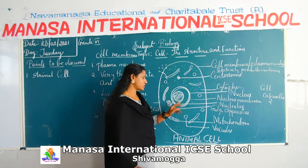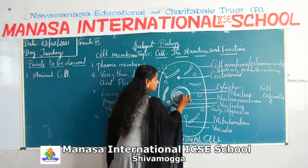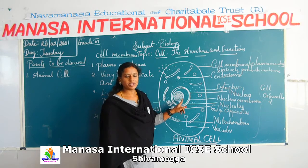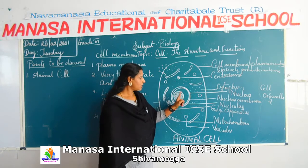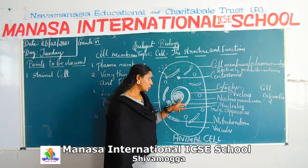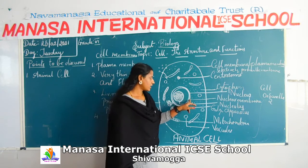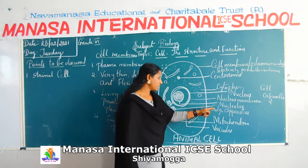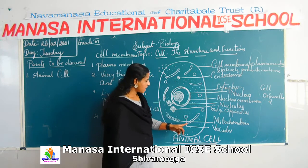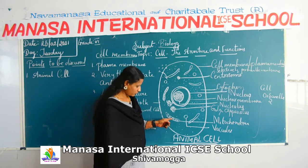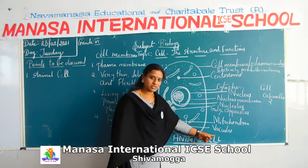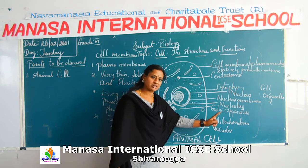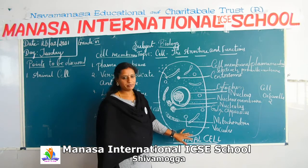Inside the nucleus we have the nucleolus, where exactly the DNA, the genetic material, is found. We will discuss this in detail in Grade 9 — it is very interesting. For 6th grade, remember: this is the nucleus, this is the nucleolus, this is the DNA. The membrane around the nucleus is called the nuclear membrane. Then we have the Golgi apparatus, and we have mitochondria — the powerhouse of the cell, which we will study in detail in 9th grade. We also have small circular structures called vacuoles — food vacuoles and contractile vacuoles.